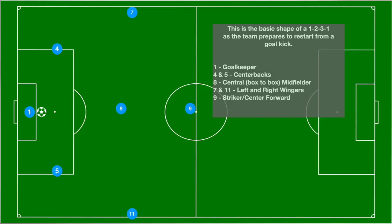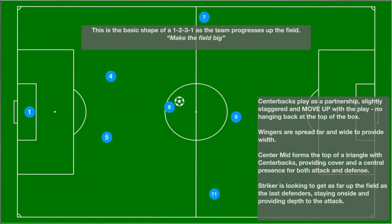In the following slides we'll look at the formation as it moves up the field. Here is the basic shape of a 1-2-3-1 as the team prepares to restart from a goal kick. You can see pretty clearly the 1 with the goalkeeper, the 2 center backs, the 3 midfielders across the middle of the field, and the number 9, the striker up top. As play moves up the field it still looks like a 1-2-3-1 as we stretch the field from sideline to sideline making the field big.